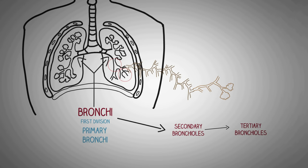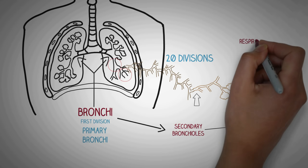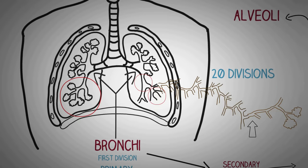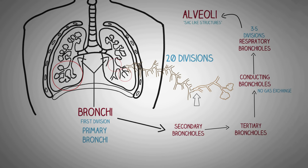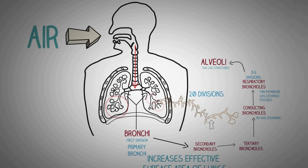The tertiary bronchioles divide many times to form very small sac-like structures. The conducting bronchioles then form a four to five division series of respiratory bronchioles, which are in turn connected to the alveoli. The conducting bronchioles have large or thick walls so no gas exchange happens in them, but respiratory bronchioles have very thin walls allowing some gas exchange. However, the majority of gas exchange happens in the alveoli because of their close proximity to blood vessels. This extensive division of the bronchioles greatly increases the effective surface area of the lungs, allowing the inhaled air to finally reach the alveoli.